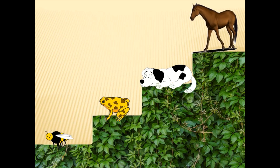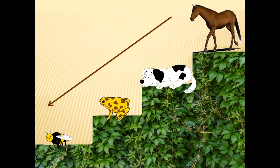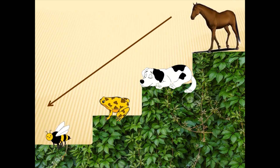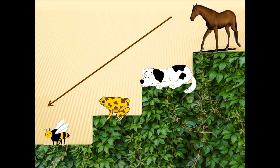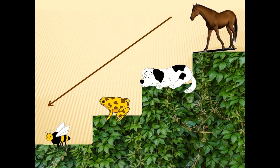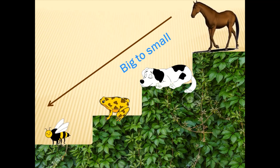Look at these pictures children. What do you notice? You notice animals — animals moving downwards. We have a horse right at the top and a honeybee right below. So these animals are arranged from big to small. We have horse, then the dog, then the frog, and then the bee.